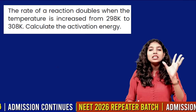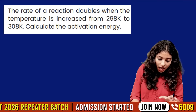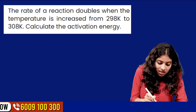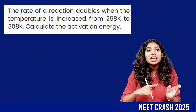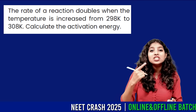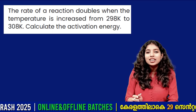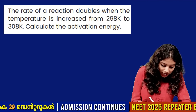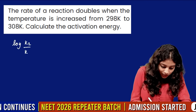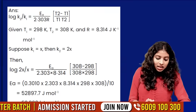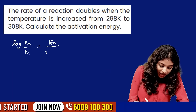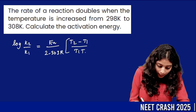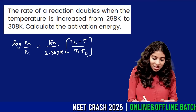The next question: the rate of reaction doubles when the temperature is increased. We use the activation energy formula: Ea = 2.303 × R × log(K₂/K₁) × (T₁ × T₂) / (T₂ − T₁).